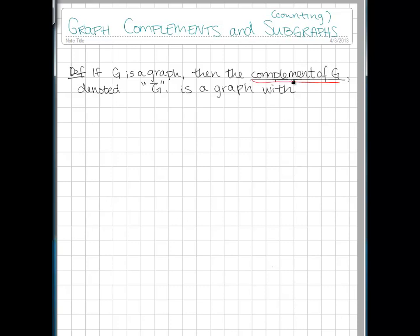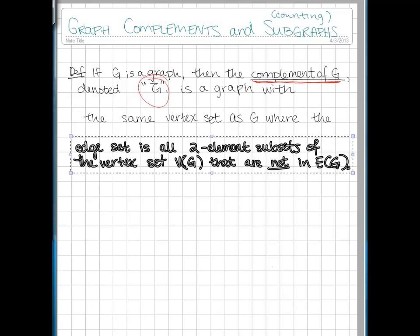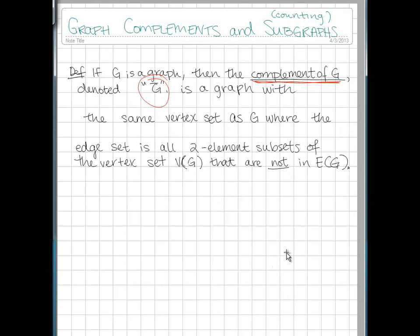We're going to talk first about the idea of the complement of a graph. The complement of G, which is denoted G-bar, is a graph with the same vertex set as G where the edge set is all the two-element subsets of the vertex set that are not in the edge set of the original graph.